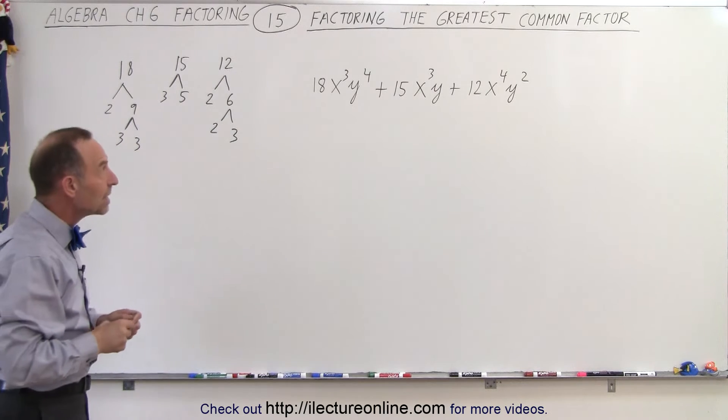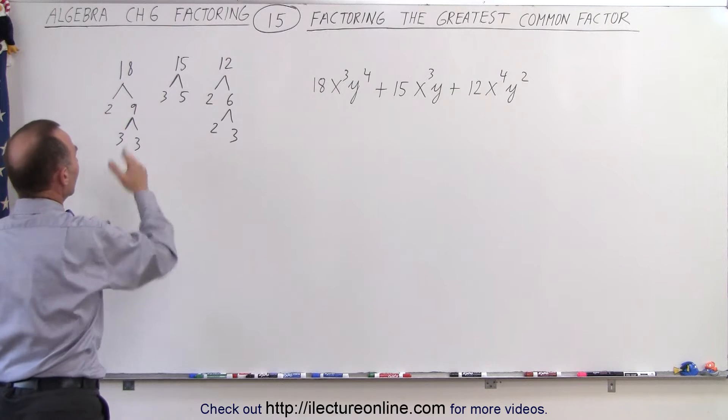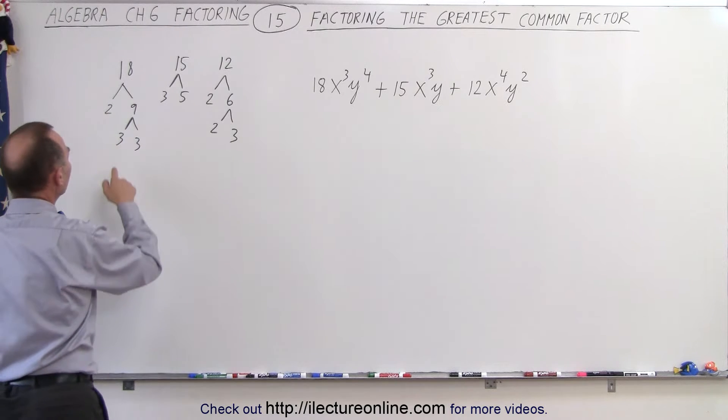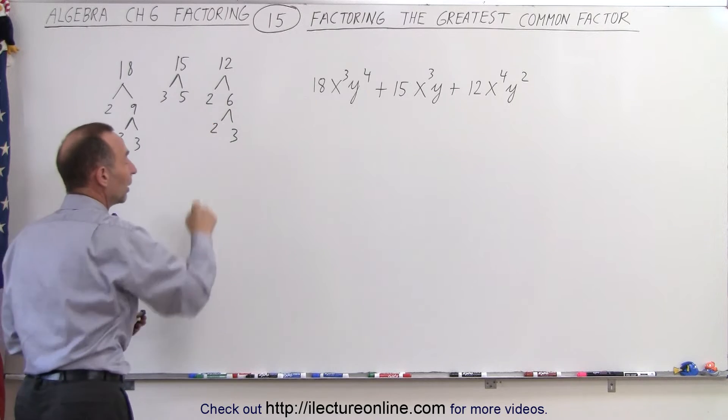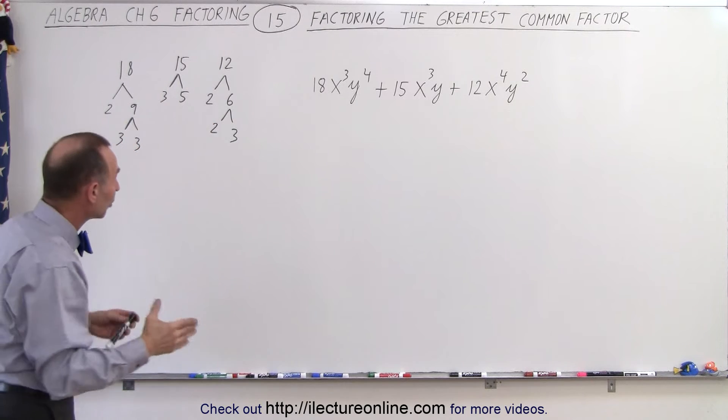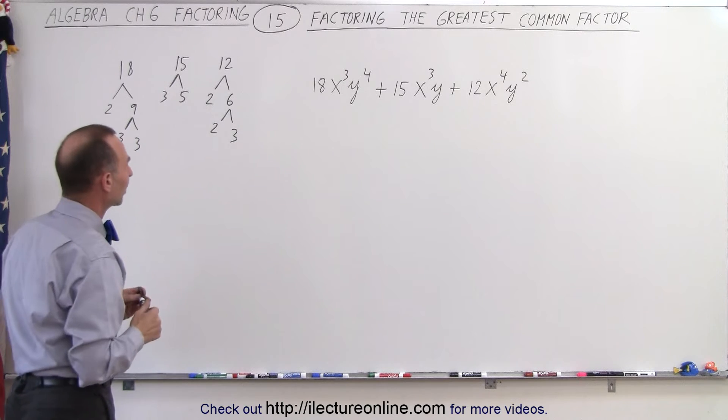So to find the greatest common factor, what we want to do is find all the common factors. So first of all, the number 2. We find the number 2 here, we don't have one here, and we have two of them there. So since we don't have the number 2 on one of the three numbers, 2 will not be part of the factors.